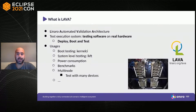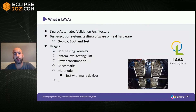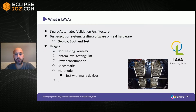LAVA — the Linaro Automated Validation Architecture — is a test execution system: it tests software on real hardware. The three main sections are deploying the image, booting, and testing. Common use cases include boot testing with KernelCI, system-level testing on LKFT, power consumption benchmarks, bootloader testing, and many others.